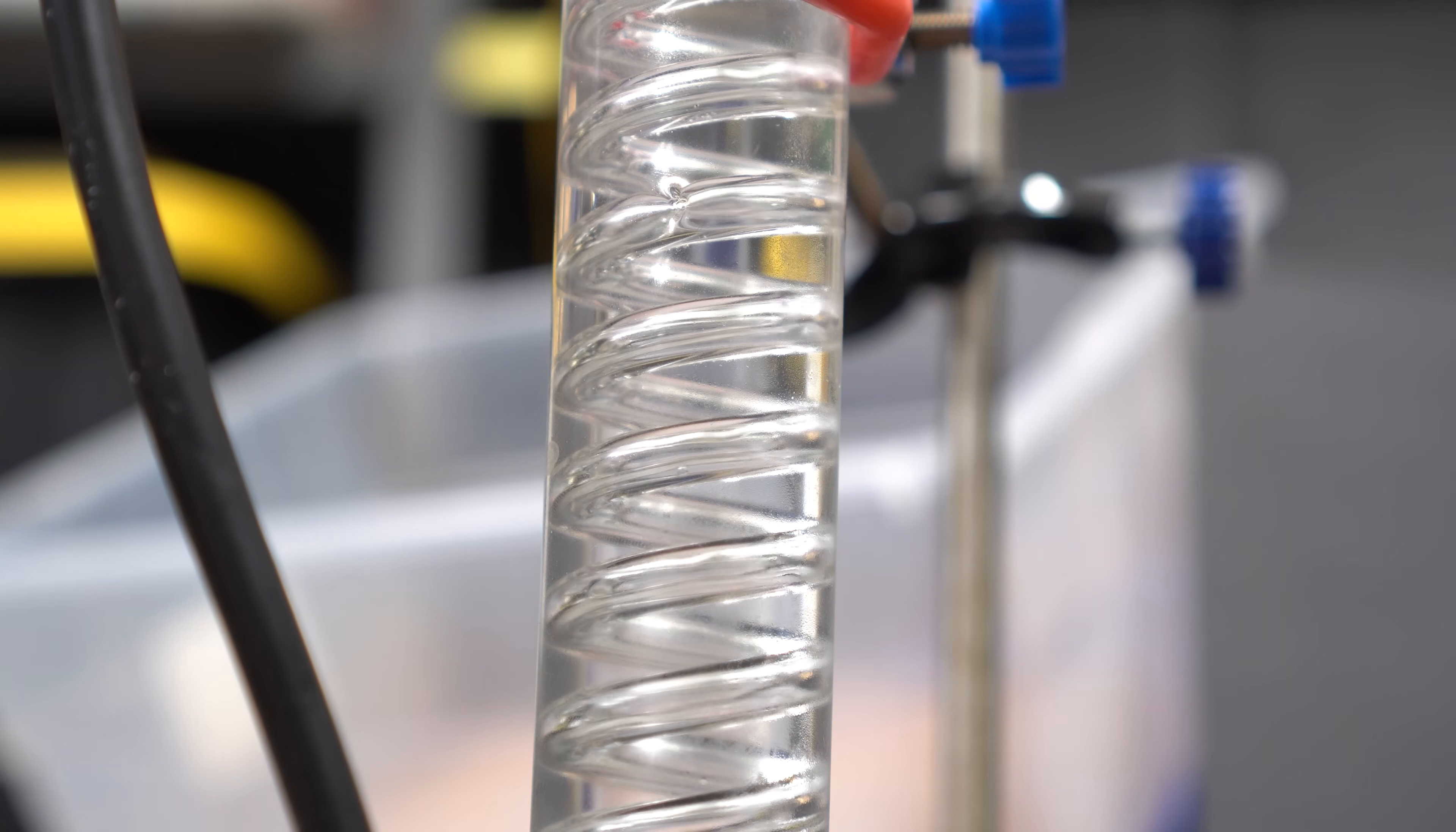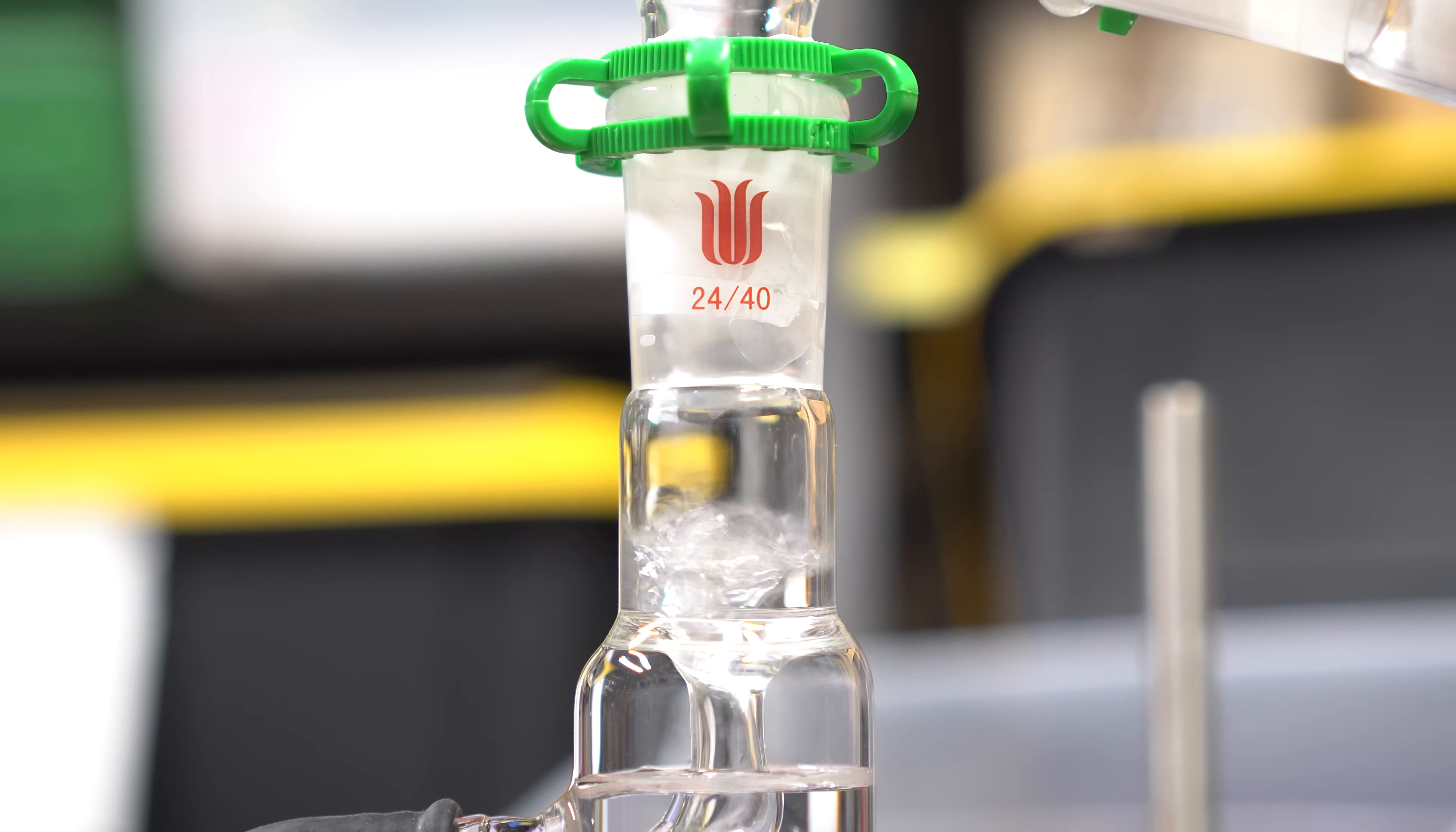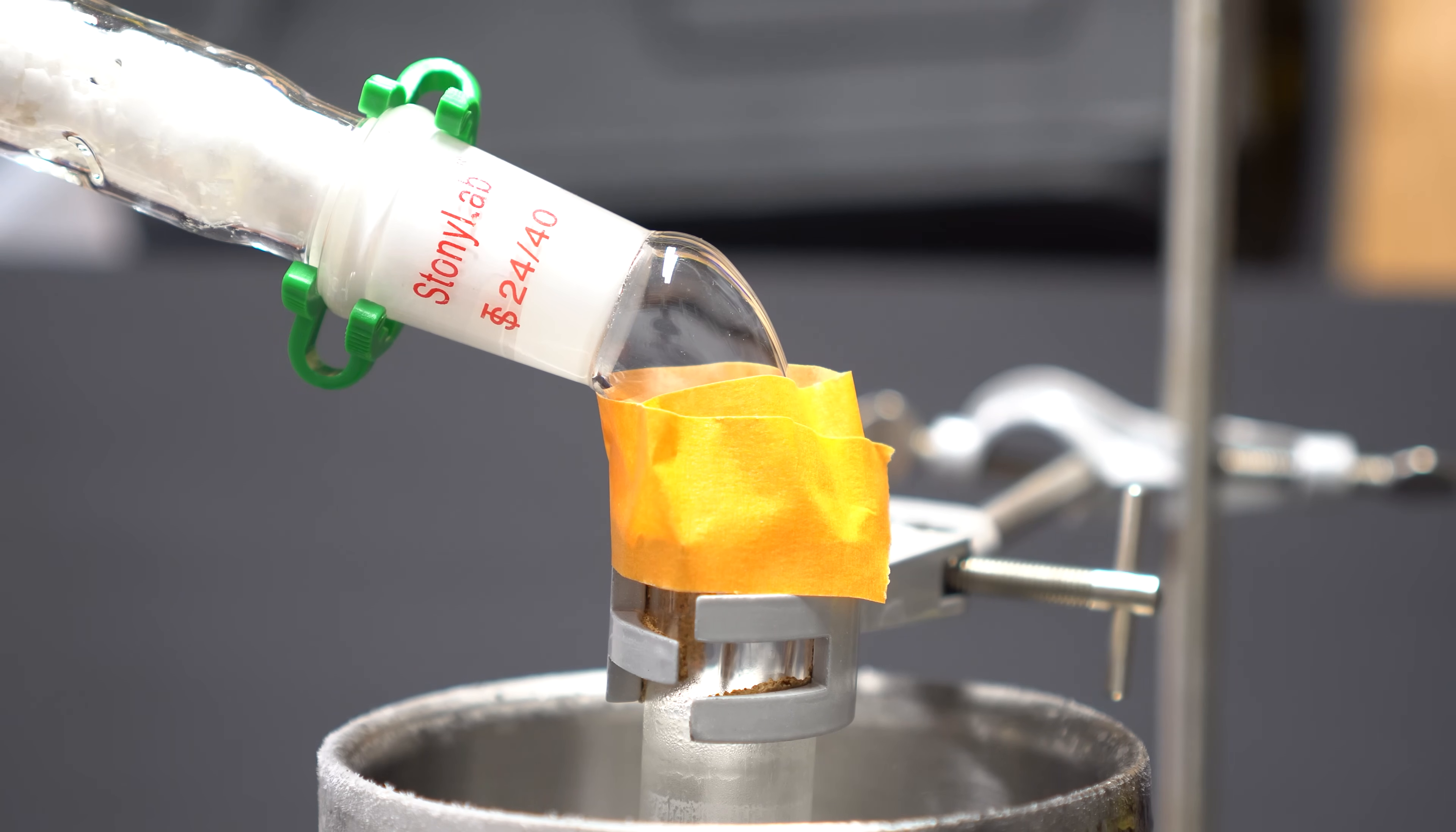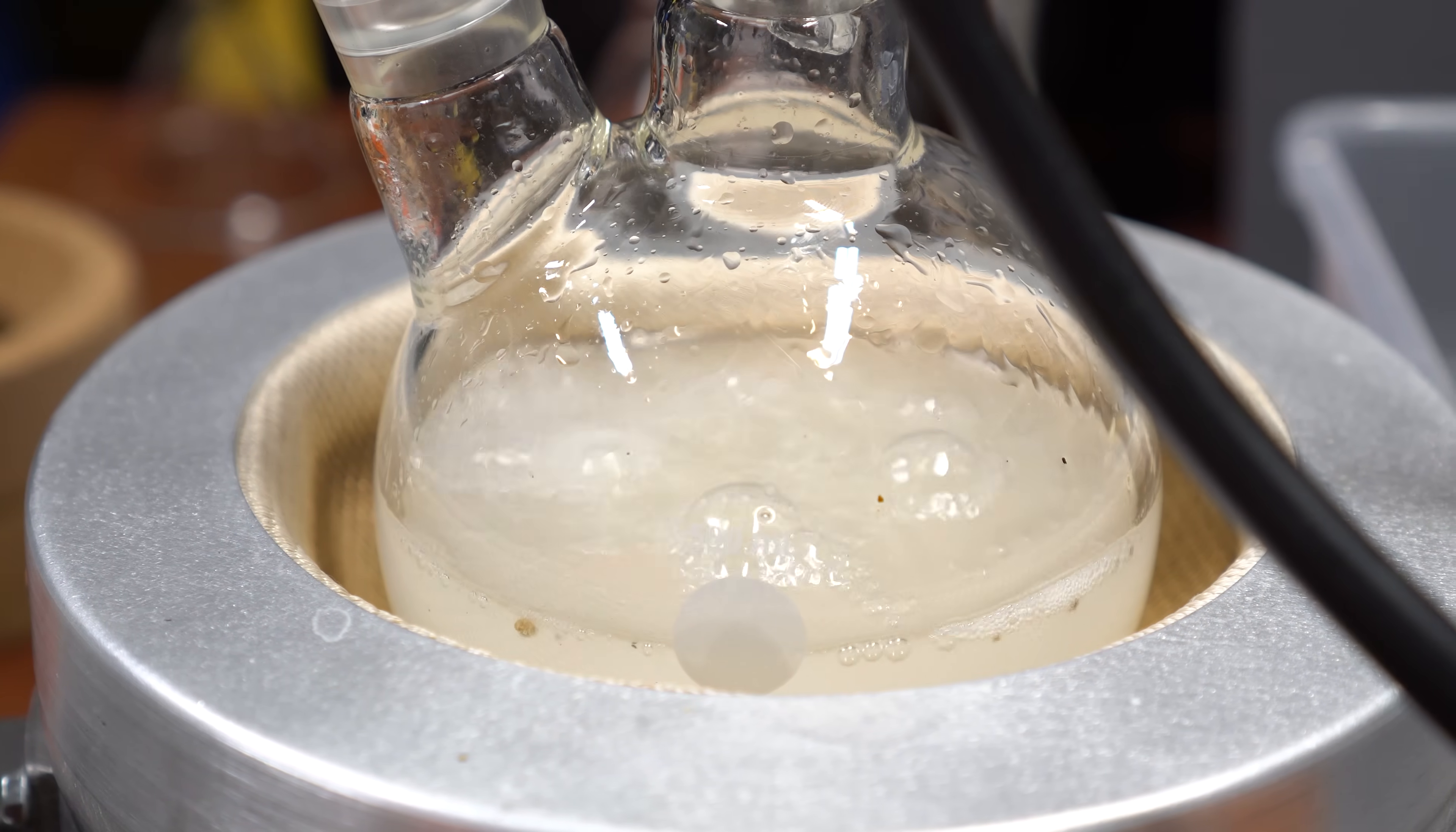I actually cranked the heat up too much and a lot of water was making its way up the tube. There was so much water vapor going up the tube that water was erupting out of the top of the Graham condenser. I was worried about it going over the horizontal condenser. I had to turn the heat down, but luckily no water made it over. The ammonia gas being liberated is being dried by the potassium hydroxide, which is highly hygroscopic and attracts and holds water molecules from the surrounding environment.